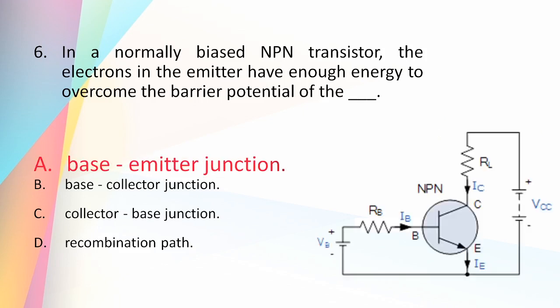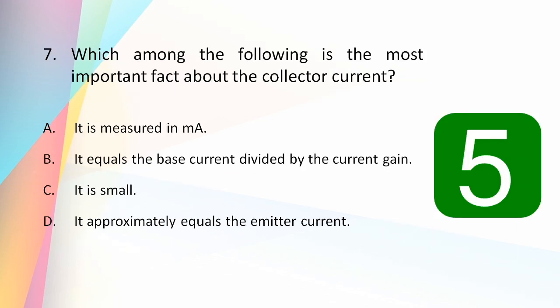The flow of electrons from the collector to emitter is controlled by the base-to-emitter electrons, which have a certain potential energy. There is a chance of the heavy potential energy from the collector electron affecting the base-emitter junction, so the electrons in the emitter must have enough energy to overcome the barrier potential of the base-emitter junction. Which among the following is the most important fact about the collector current? It is measured in milliamps, it equals the base current divided by the current gain, it is small, or it approximately equals the emitter current?